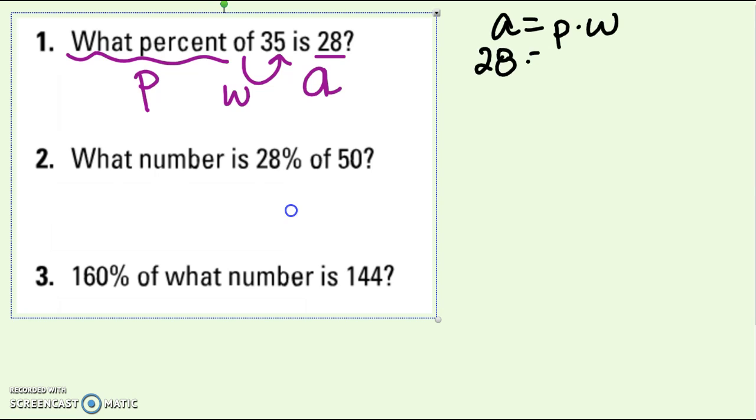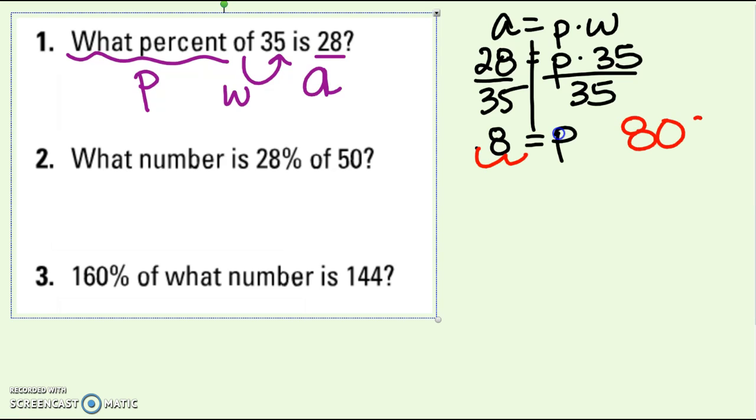Plug everything into the right spot. The part is 28. The percent I don't know, so it's still P. And then the whole is 35. I solve it just like any equation that we did in chapter 3. Get P by itself, so divide by 35. I get 0.8. But since this is a percent, I have to translate that decimal back into a percent. Move it over two places and I get 80 percent. So 28 is 80 percent of 35.